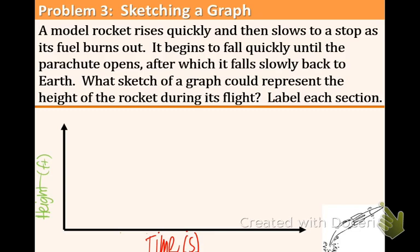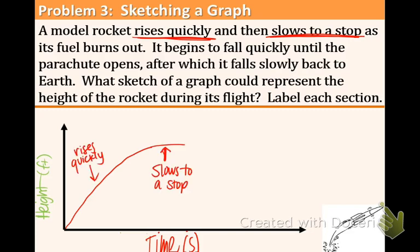The first one is rises quickly. What's that going to look like? Well let's have a curve that goes up fairly quickly. Now slows to a stop, and that's when the fuel is burning out. So slows to a stop is going to be at the top. And let's label that. Then what happens is that it begins to fall quickly. So that's our next key phrase. So it's falling quickly like this. And then it falls slowly when the parachute opens. So something like that graph and let's label the rest.